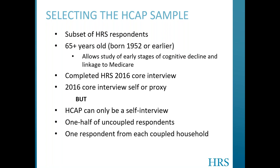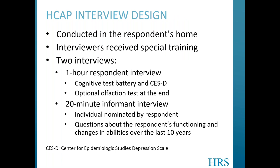To ensure representation of both single and coupled households, sampling included random selection of one half of all eligible single respondent households and random selection of one respondent from each eligible coupled household. Like the HRS face-to-face interviews, the HCAP respondent and informant interviews took place in the respondent's home and were administered by specially trained HRS interviewers. The interview design included a respondent interview that took approximately one hour and an informant interview that took about 20 minutes to complete.